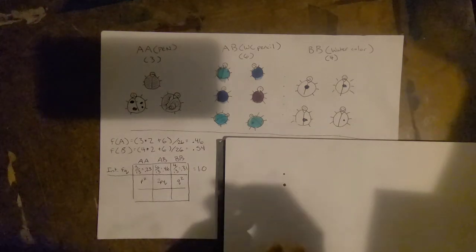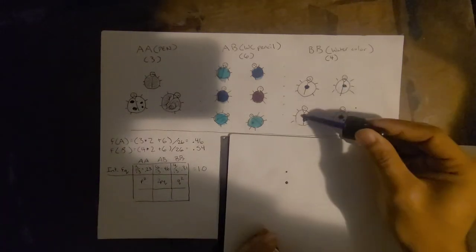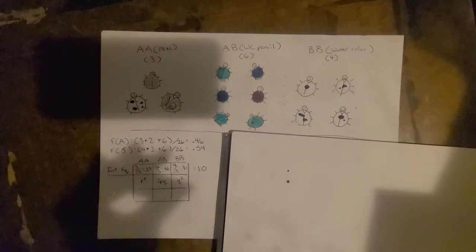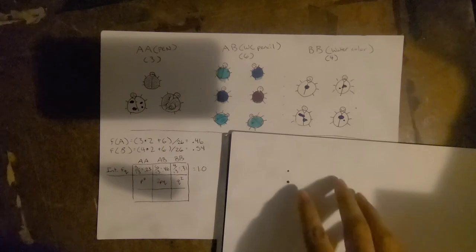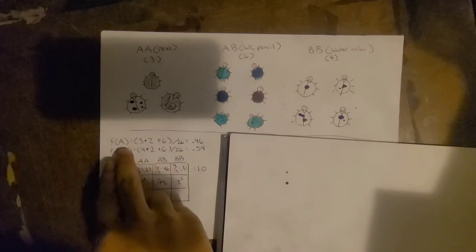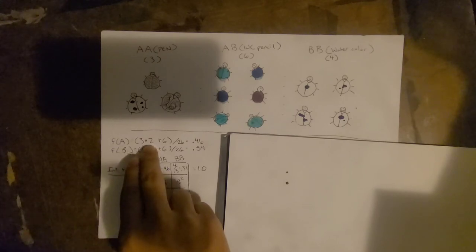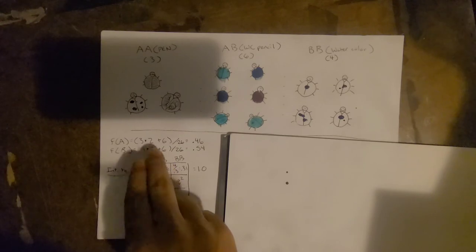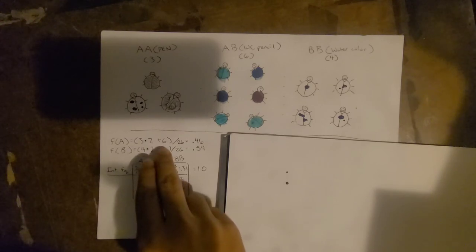So under normal conditions, these will follow the Hardy-Weinberg equilibrium principle here. The frequency of the big A allele will be the AA population times two because there are two big A's, plus the six A's from the heterozygous,